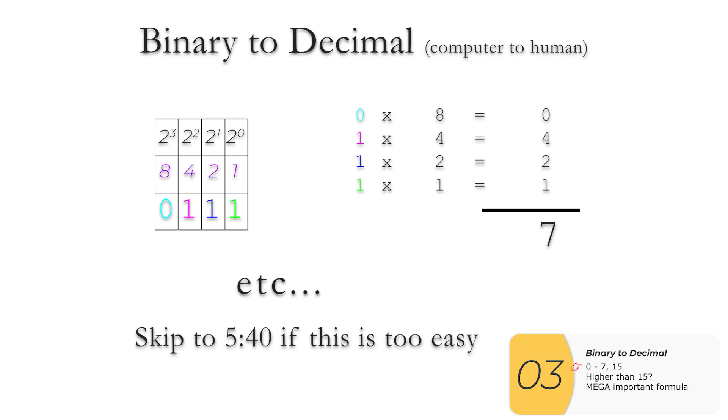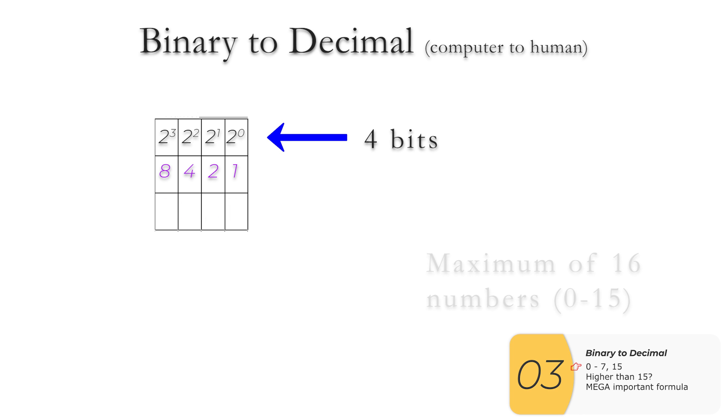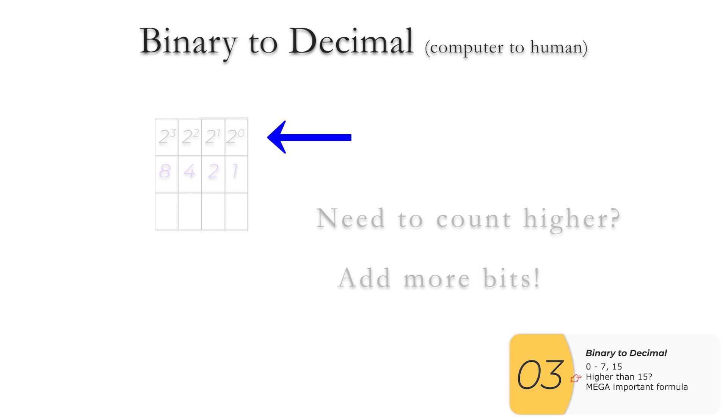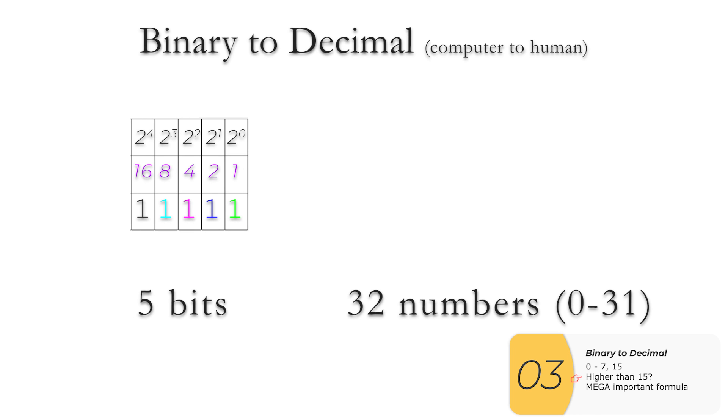Again, if I want to convert binary to decimal, that is computer to human, this is the procedure. And with these 4 bits, I can go all the way up to 15. If I turn on all these bits, then I have 15. Again, these 4 bits will allow me to go from 0 to 15, which is a maximum of 16 numbers. So what happens if I need to count higher than that? Well, I need to add more bits. So if I add one more bit, I can count from 0 to 31, which is 32 numbers. And there's a formula that tells me how high I can count up, depending on how many bits I have. And it's this, and it's super important.